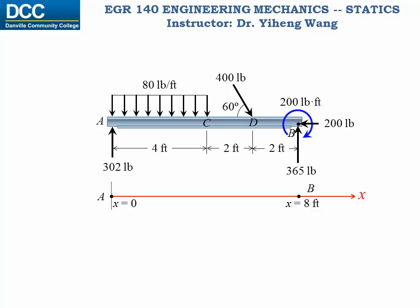Next, we want to section the member. Before doing that, let's take a look at the loadings on the member — you can tell the loadings change. Intuitively, we cannot use a single shear force function or a single bending moment function to describe the entire member. Since points C and D are where changes happen, for this problem we are going to cut the member three times: section 1 between points A and C, section 2 between points C and D, and section 3 between points D and B. Every time we section the member, we will take the entire left segment for analysis, because this way the length of the segment is x, as defined by the x-axis we set up.